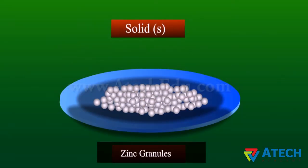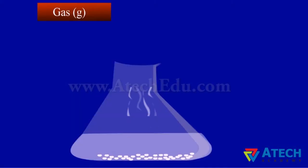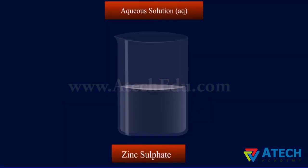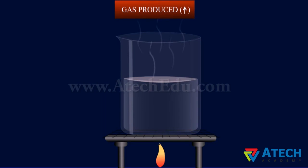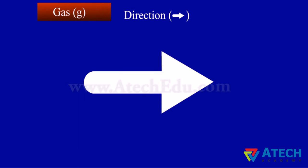In a chemical equation, any solid like zinc granules is denoted by (s), any liquid like sulfuric acid is denoted by (l), any gas like hydrogen gas is denoted by (g), and any aqueous solution like zinc sulfate is denoted by (aq). A gas produced is denoted by an arrow pointing upward, and a precipitate formed is denoted by an arrow pointing downward. Reactants and products are separated by an arrow pointing in the direction of the reaction.